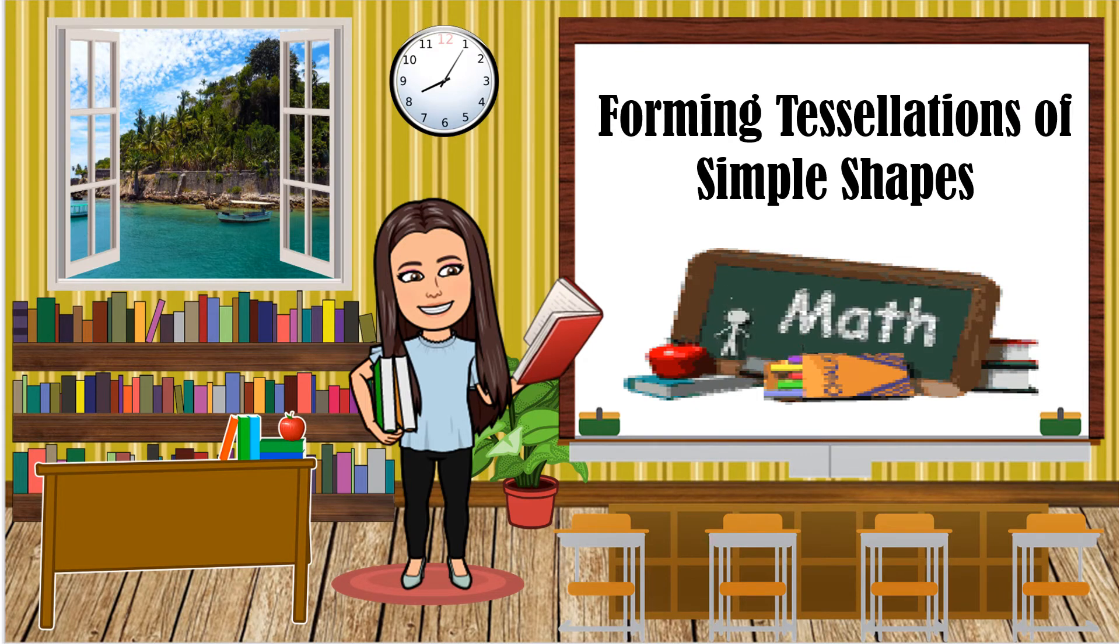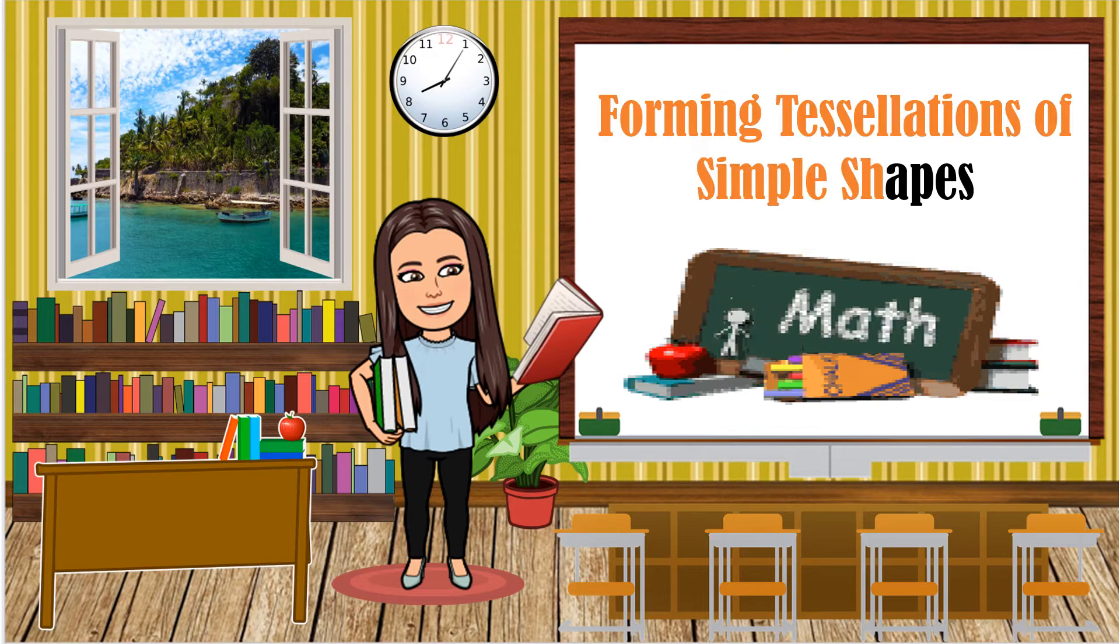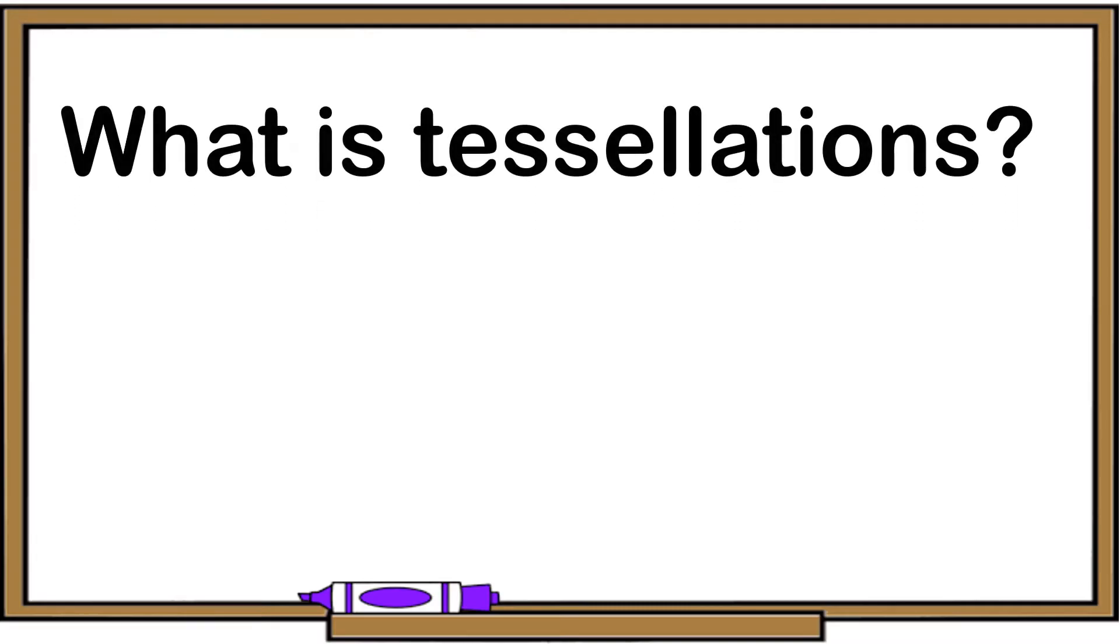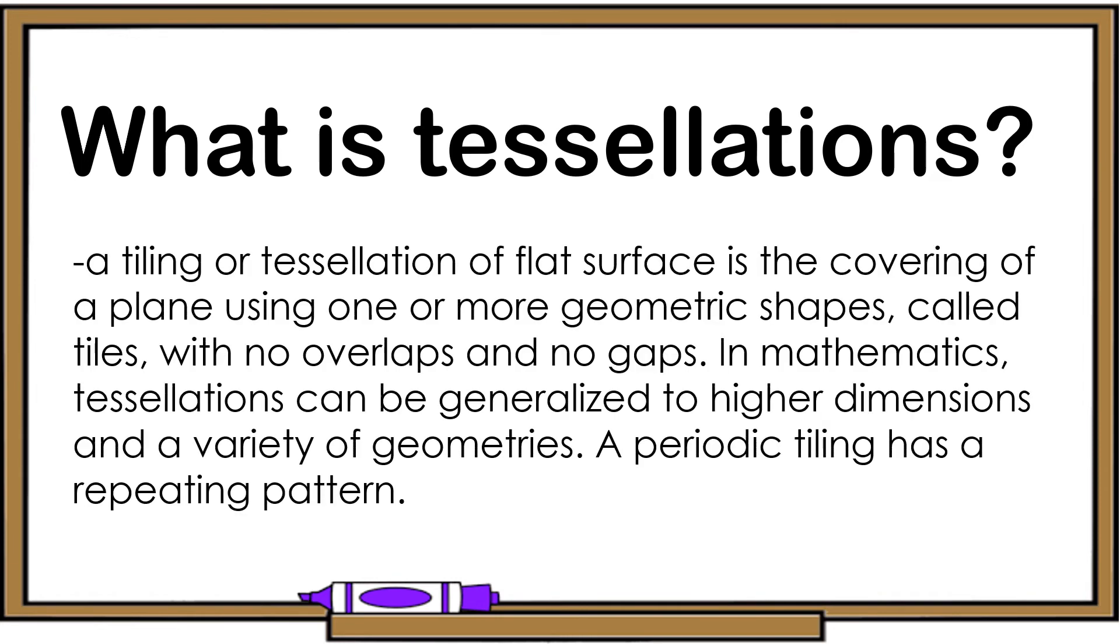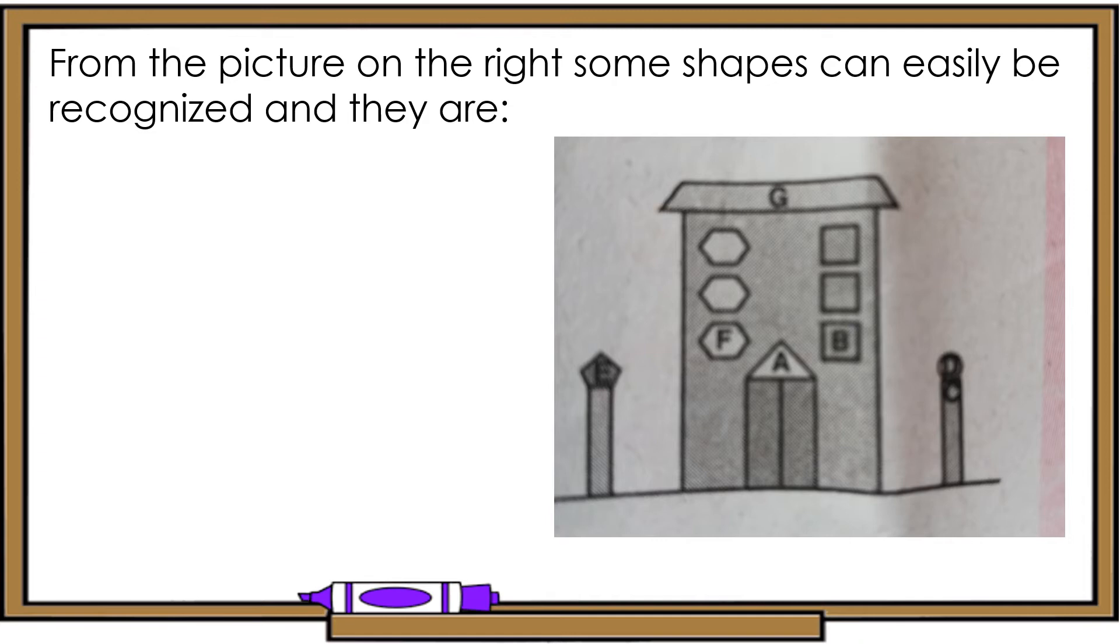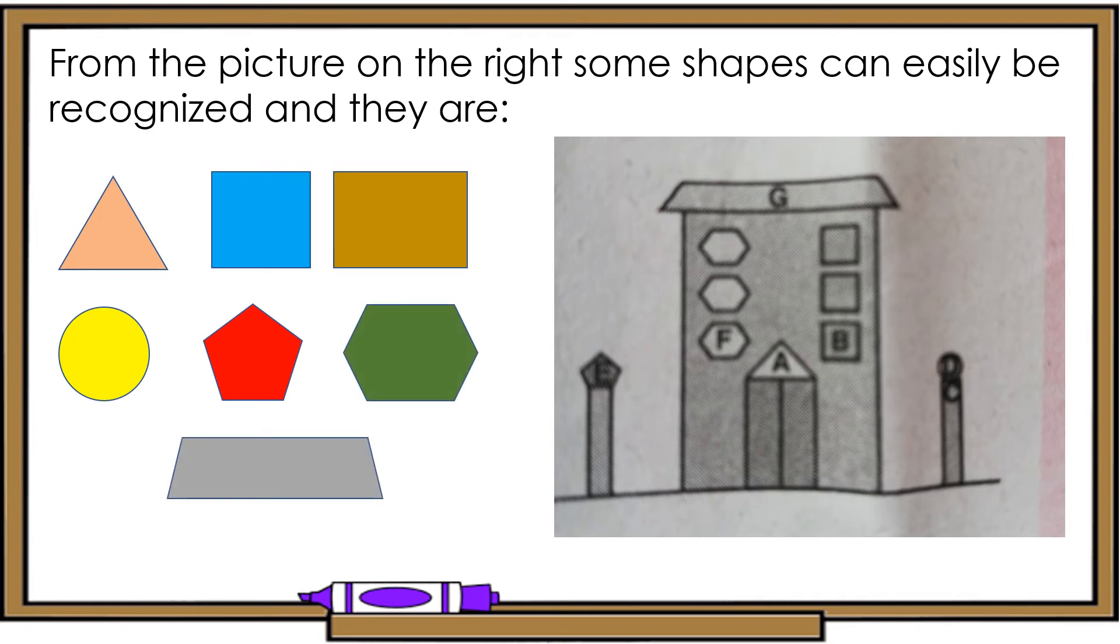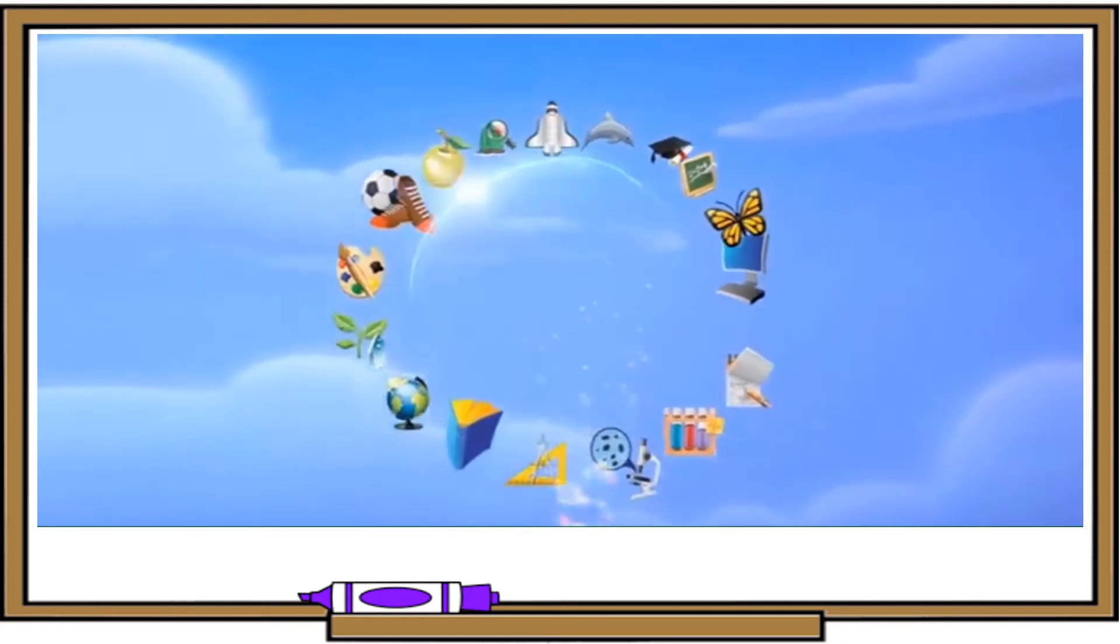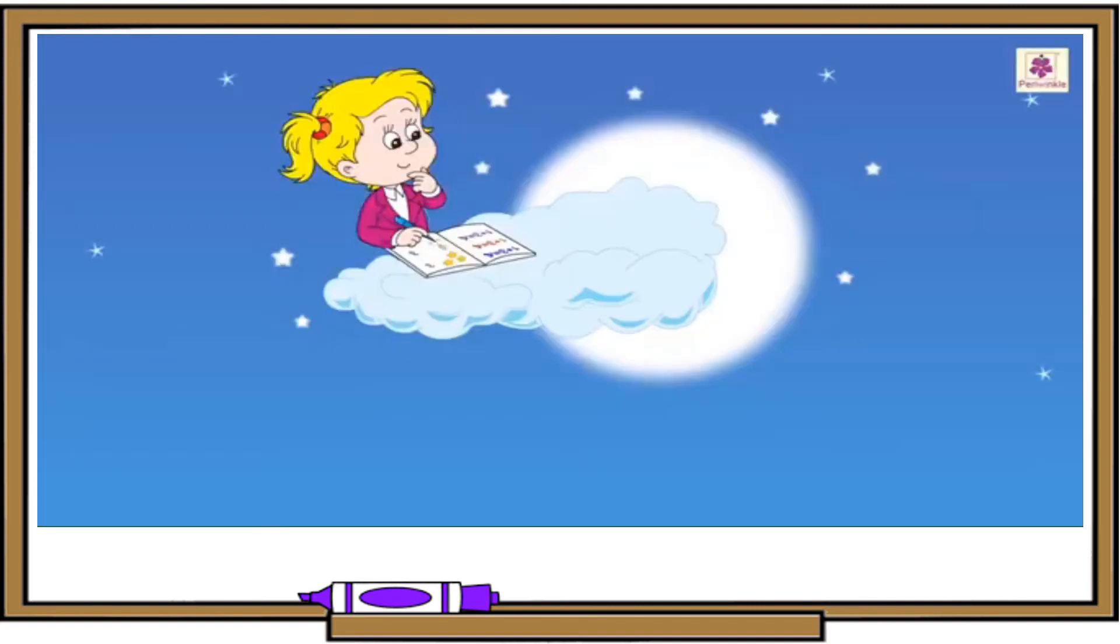Now, children, let's have a review in forming tessellations of simple shapes. What is tessellations? A tiling or tessellation of flat surface is the covering of a plane using one or more geometric shapes, called tiles, with no overlaps and no gaps. In mathematics, tessellations can be generalized to higher dimensions in a variety of geometries. A periodic tiling has a repeating pattern. From the picture on the right, some shapes can easily be recognized and they are triangle, square, rectangle, circle, pentagon, hexagon, and trapezoid.